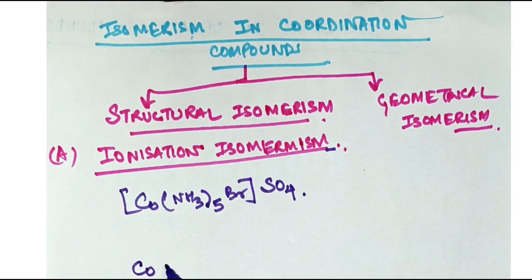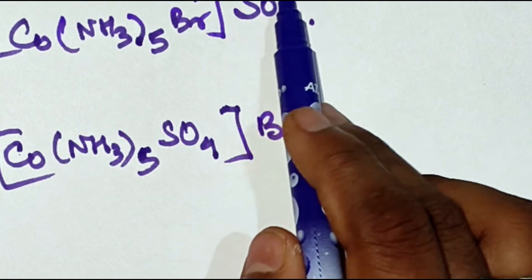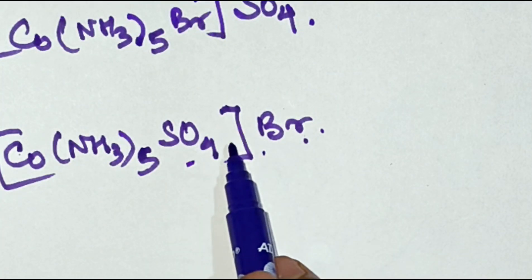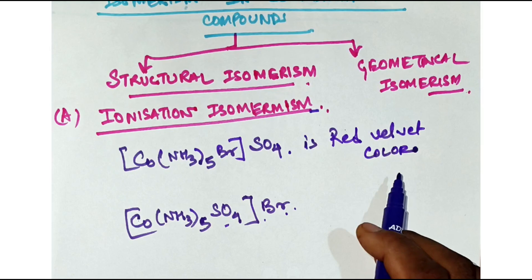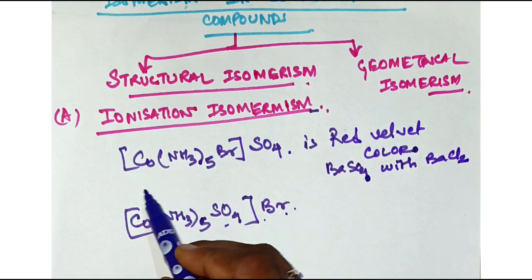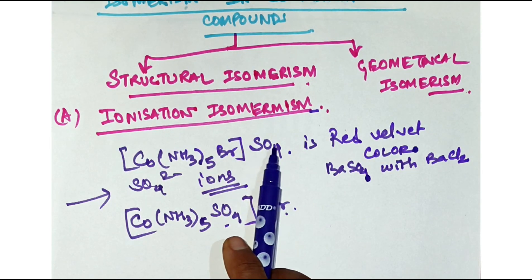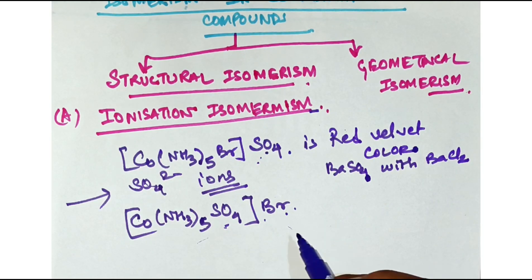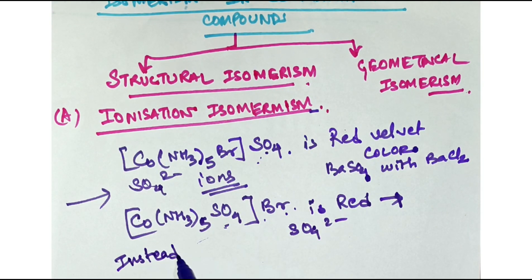Take [Co(NH₃)₅Br]SO₄ and [Co(NH₃)₅SO₄]Br. When you dissolve these in solution, they form different ions and exchange positions. The first compound is red-violet in color, and in solution it gives a precipitate of barium sulfate with BaCl₂, confirming the presence of SO₄²⁻ ions in solution. The SO₄²⁻ is outside the coordination sphere here.